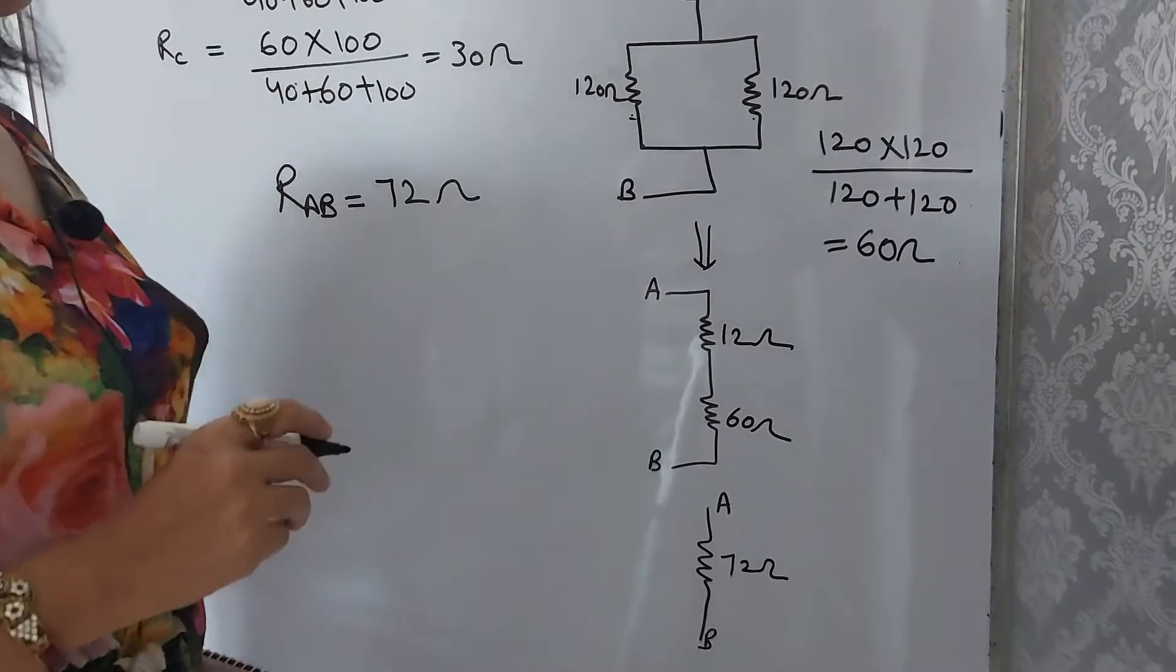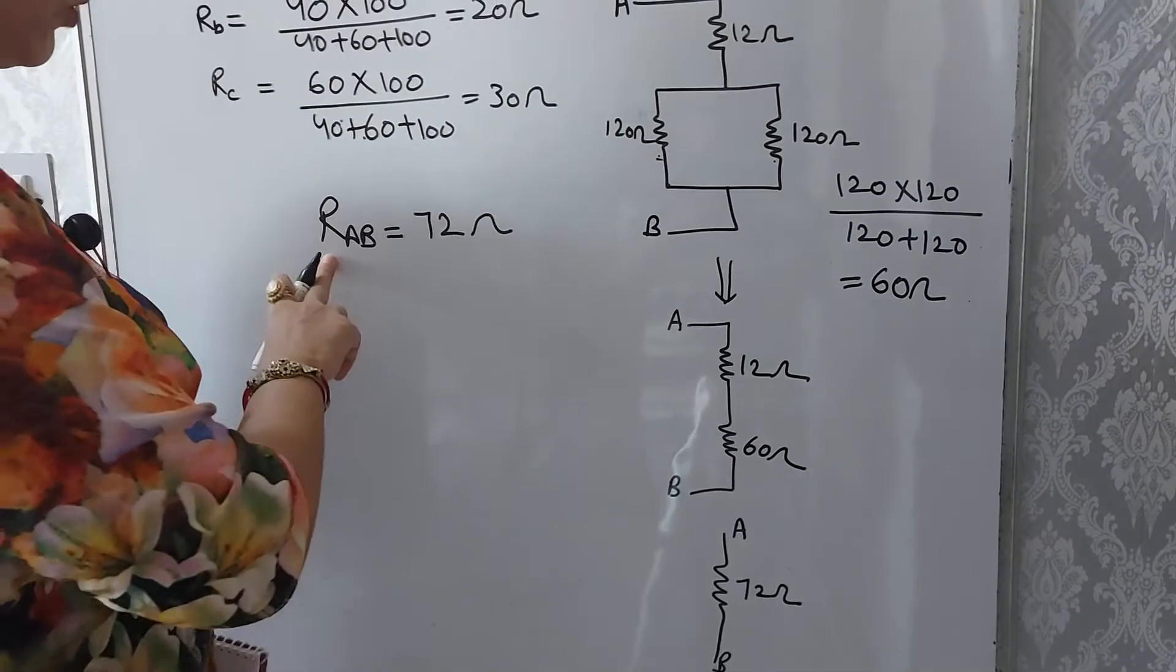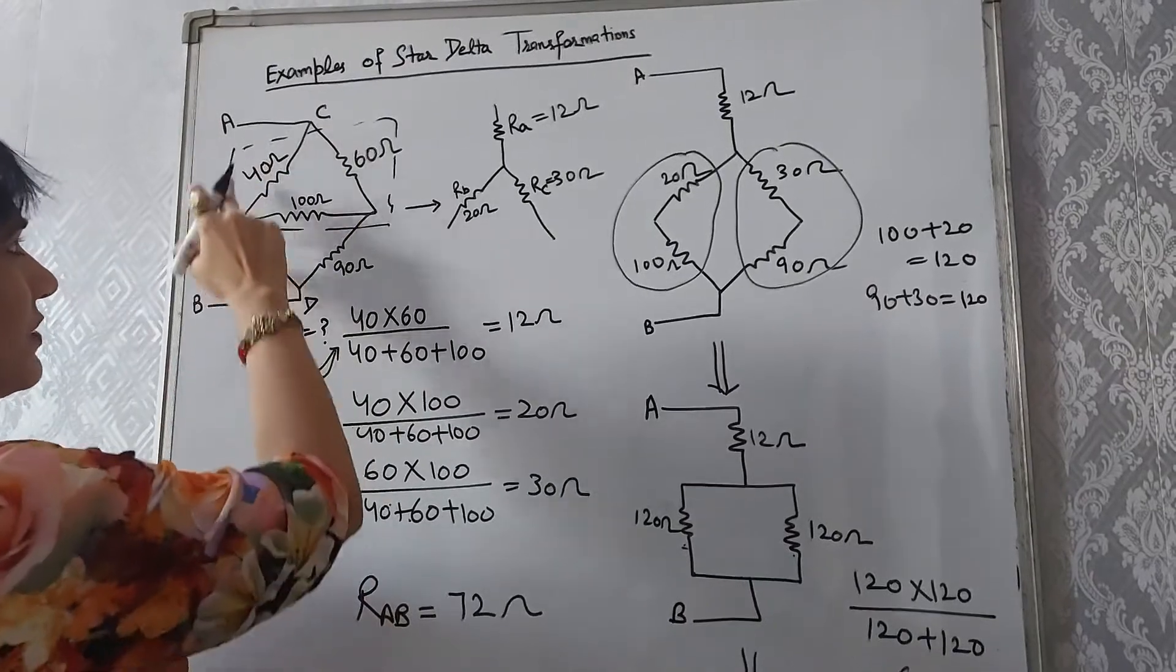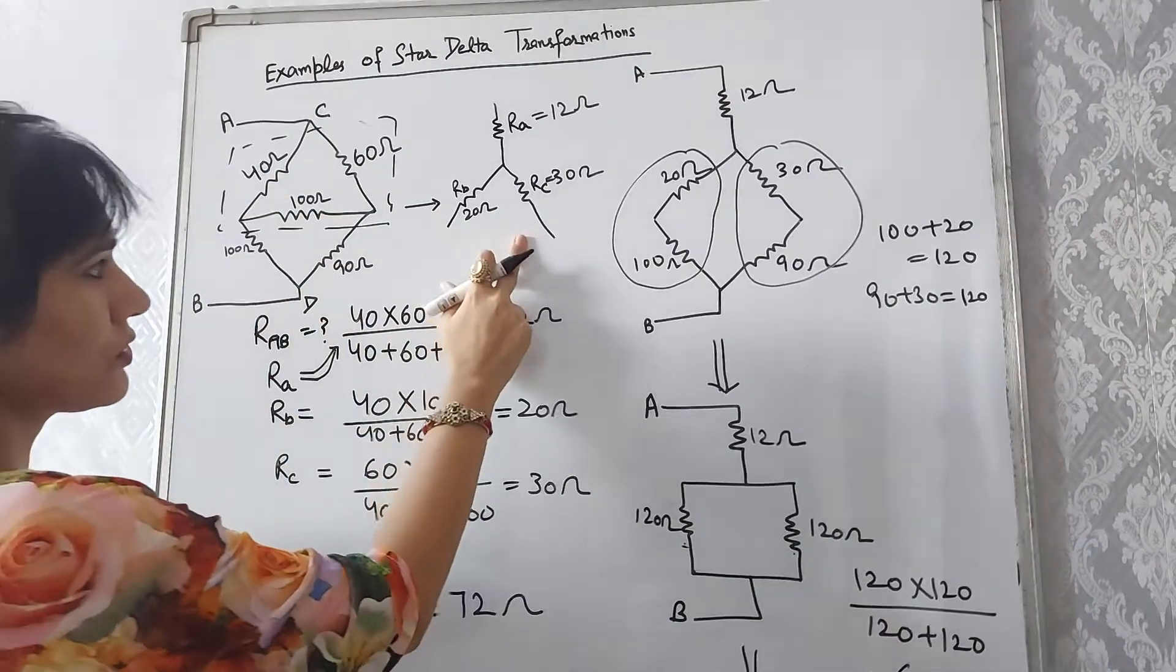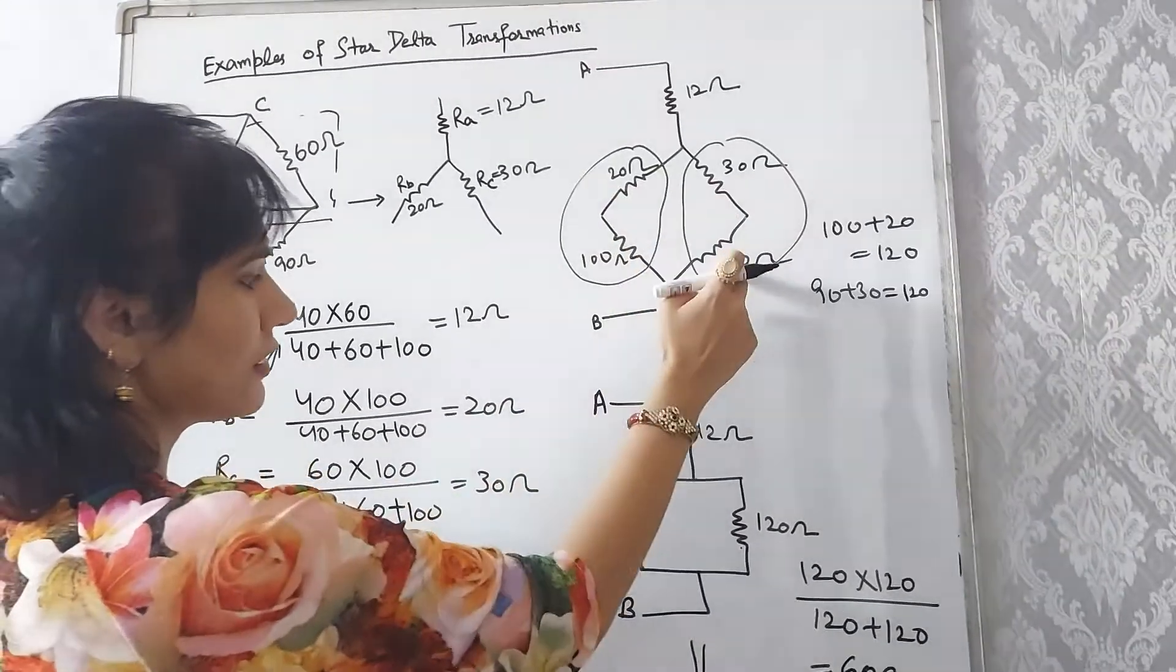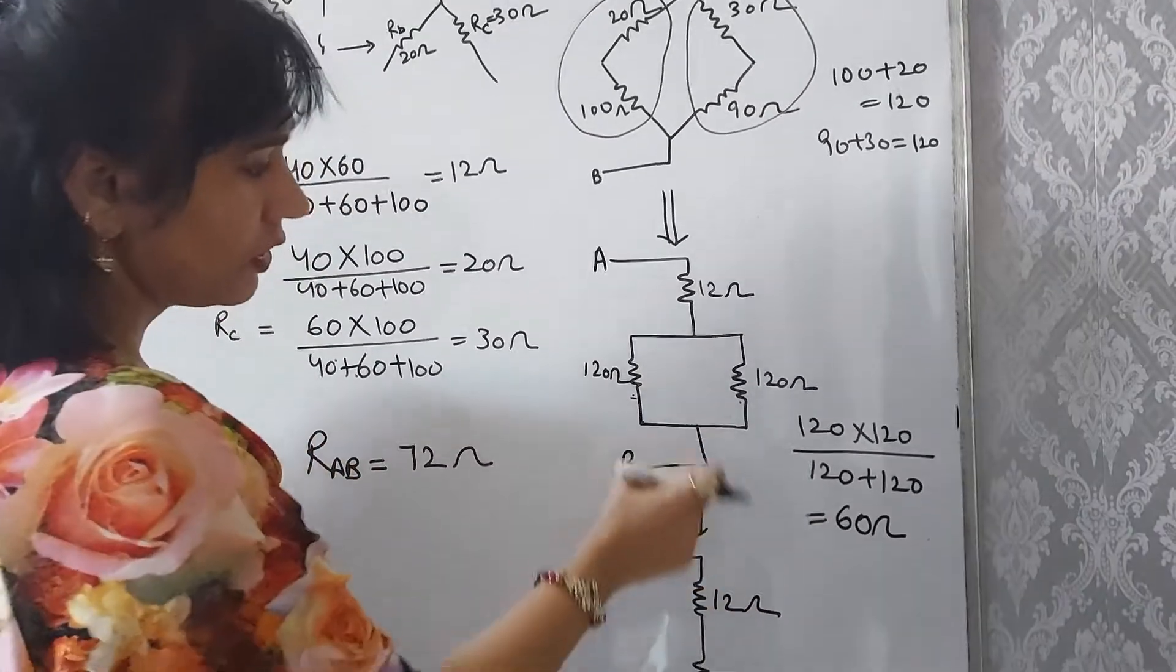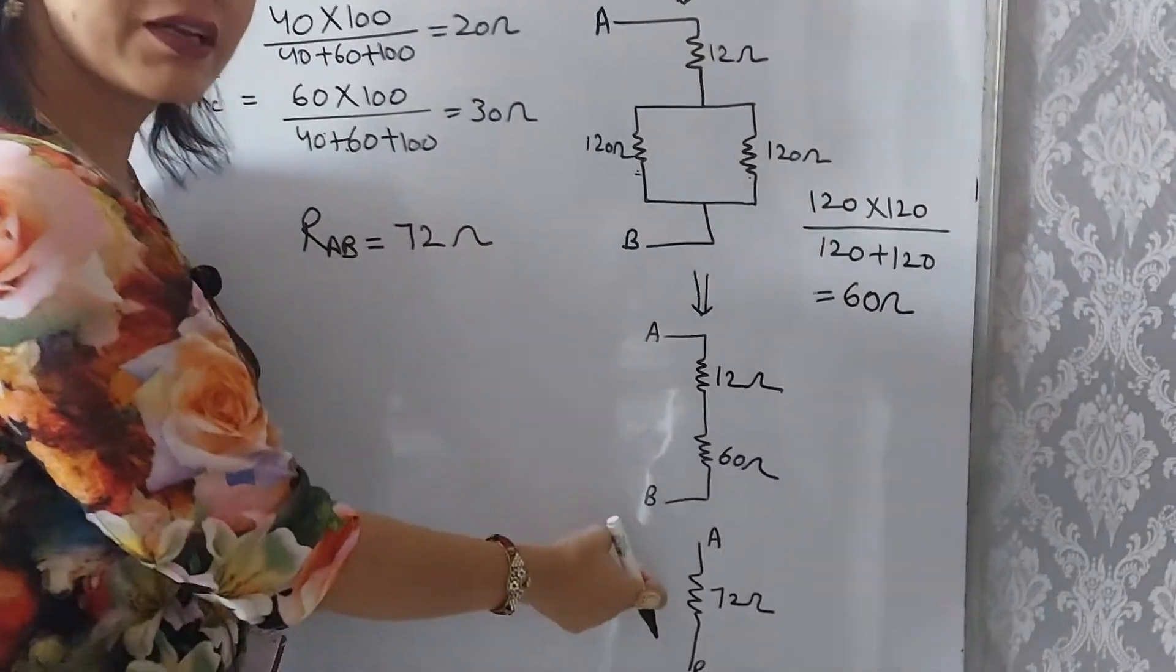So in this way we find out the equivalent resistance of RAB. Re-explaining this: we are having this circuit. From this circuit we find the delta, and this delta is converted into star. Then we see that these two are in series, we make the series combination. Then these two are in parallel, we solve this parallel combination. Then these two are in series, and finally we get the answer.